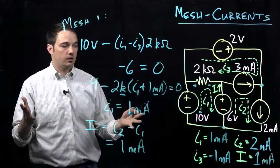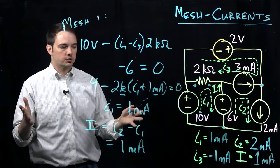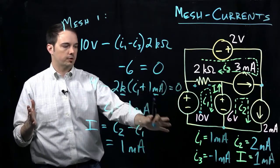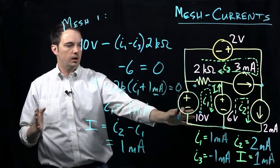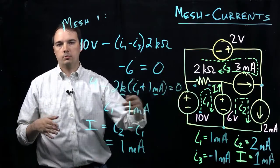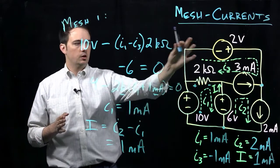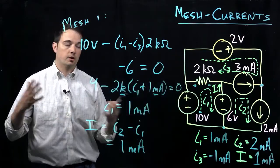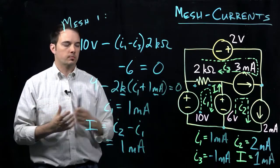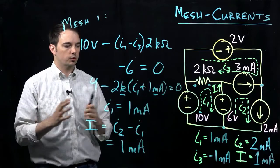So that now gives us all the solutions that we need in order to fully solve this circuit. We have all the branch currents, and from having all the currents we could figure out all the voltages across each element, and from there if we were really getting into it, thinking about the power dissipated or the power delivered by each given element.